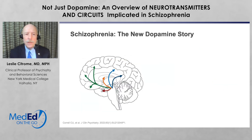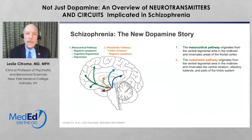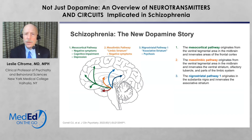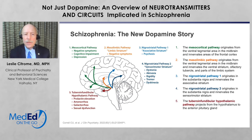We now have a total of five different circuits familiar with dopamine. We have the mesocortical pathway that explains negative symptoms and cognitive impairment, as well as depression. We have the mesolimbic pathway, which has undergone some modification, explanatory for some negative symptoms. We have our new nigrostriatal pathway that goes from part of the substantia nigra to the associative striatum, which explains psychosis. We have our traditional nigrostriatal pathway, which explains movement disorders in people receiving antipsychotics.